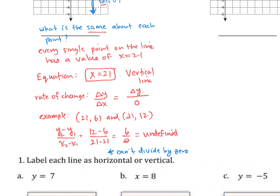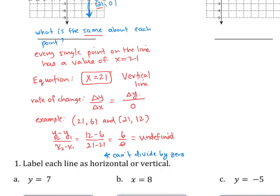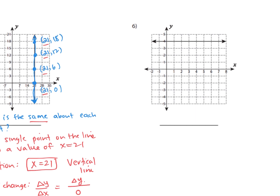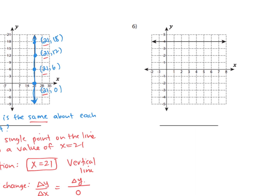So a vertical line has a special equation where x stays the same and the rate of change is undefined. Now let's look at this other line and pick some points. This point is (0, 4). This point is (3, 4). This point here is (6, 4).